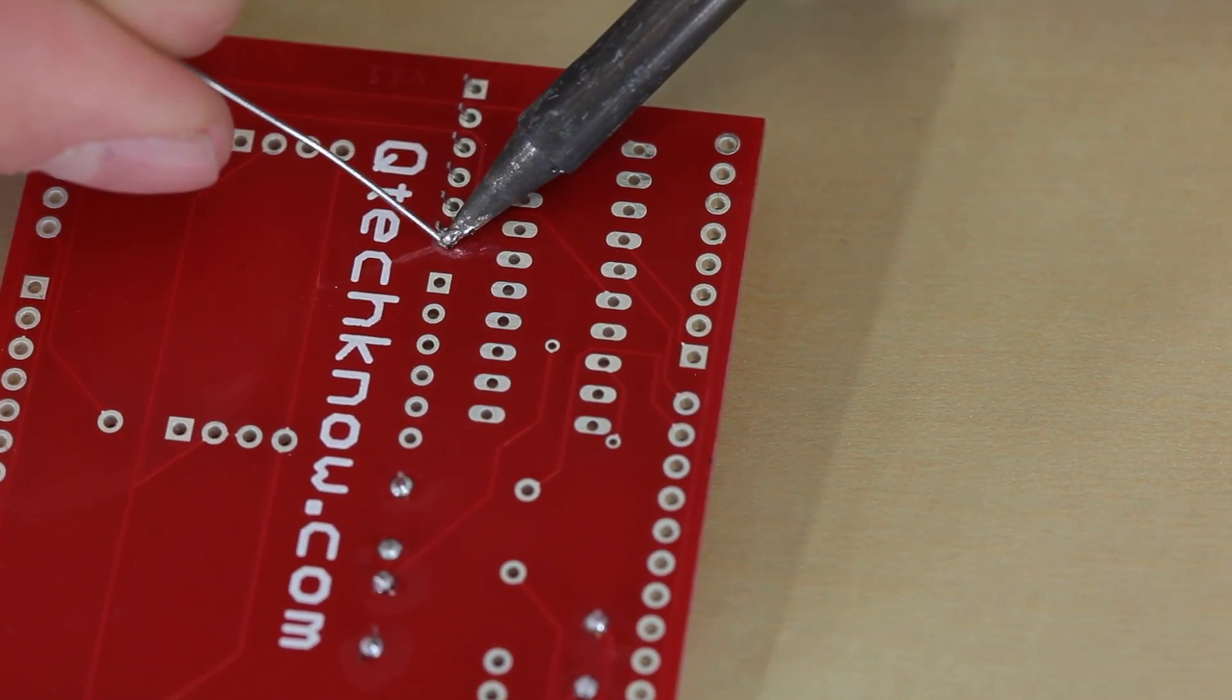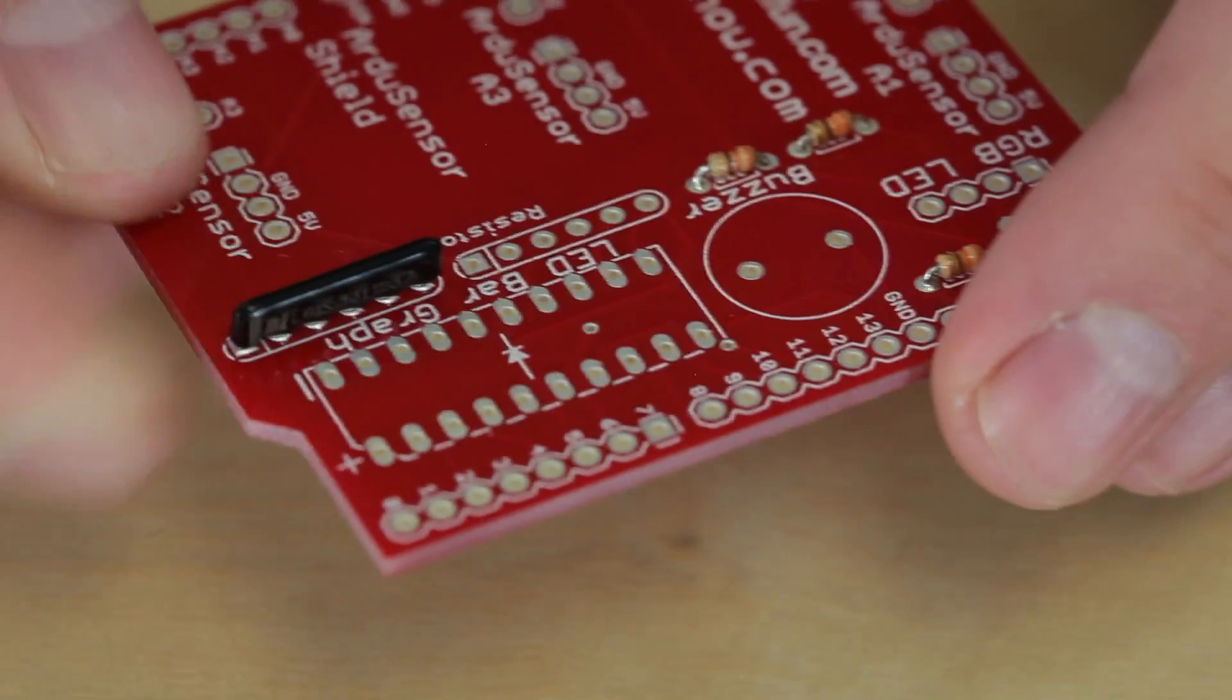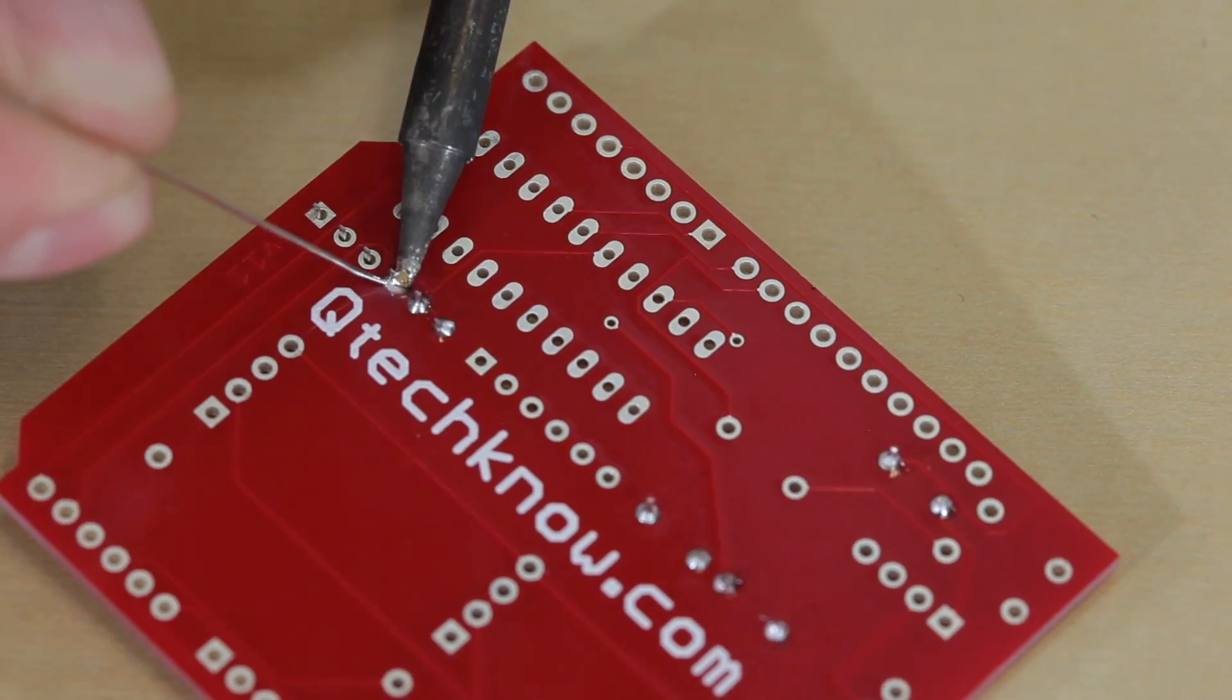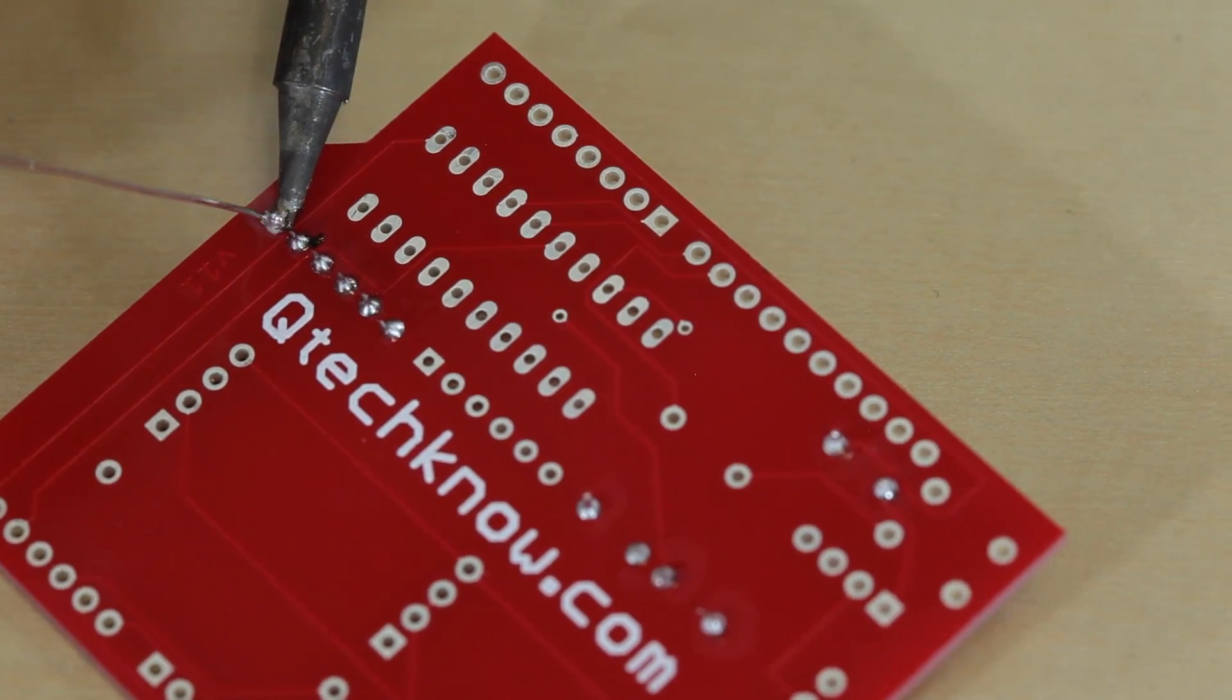The easiest way to solder these in is to just place one in there, hold it in place, flip over the board, and we're just going to solder in one pin. Then we can flip the board over and straighten it, flip it back over, and solder the rest of the pins.